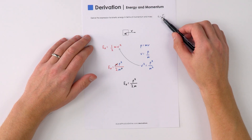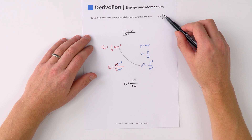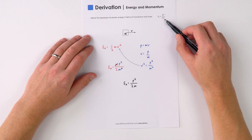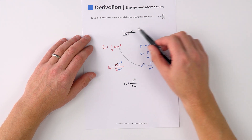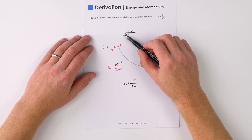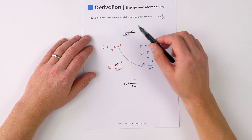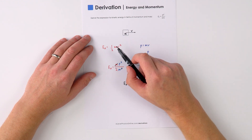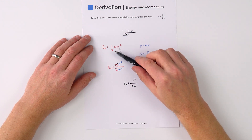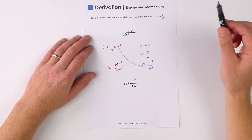This is how to quickly derive the equation for kinetic energy in terms of its momentum and its mass. Imagine we had an object of mass m moving at velocity v. We know that the kinetic energy is equal to a half mv squared.